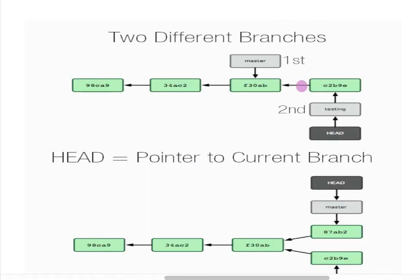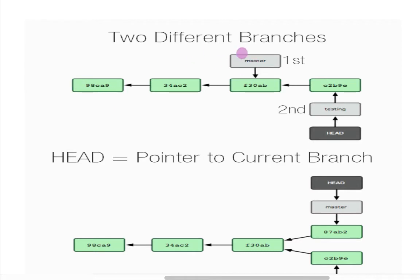It's possible that we create another branch — another pointer pointing to a particular commit. In this repository, master is pointing to F30AB and testing is pointing to C2BE. So testing has become another branch which has four commits, and master is another branch which has three commits.